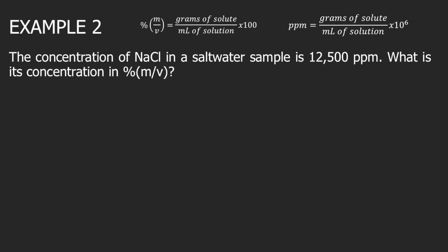Example two: the concentration of sodium chloride in a salt water sample is 12,500 ppm. What is its concentration in percent mass per volume? This time, we are given the concentration in ppm — 12,500 ppm — and we will convert this to percent mass per volume.